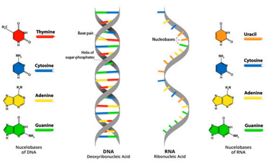A common theme throughout all biological systems and at all levels is the idea that structure and function are intimately related. Watson and Crick's appreciation that the DNA molecules within cells typically exist as a double-stranded molecule was an invaluable clue as to how DNA might act as the genetic material. What they reported in their classic 1953 paper describing the structure of DNA